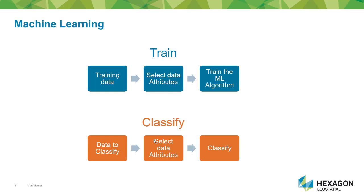For example, if you have a project for classifying images into built-up and green areas, the first thing you do is manually identify built-up and green areas in the image to be used for training the machine learning algorithm. You also select what attributes of these areas will be used for training — in this case, we may select NDVI to distinguish built-up areas from green spaces. Once the algorithm is trained to identify built-up areas and green spaces based on their NDVI values, the next step is to perform classification. You compute the NDVI value for the image and pass it to the machine learning algorithm, which classifies each pixel as built-up or green space based on its NDVI value.